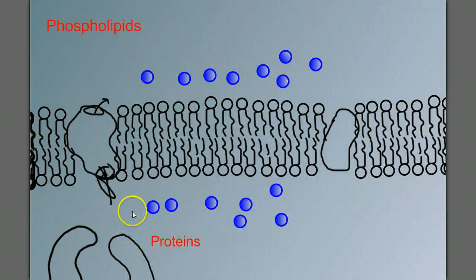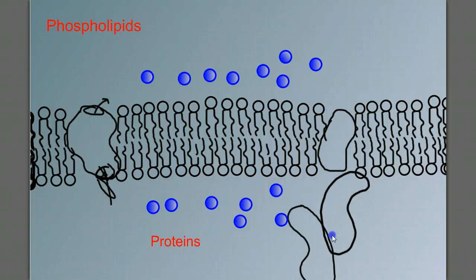Some can act as gates to allow things to travel through, or channels to allow particles to move through the cell membrane. Others have structural components and recognition components. And we'll add some other proteins in as we go.